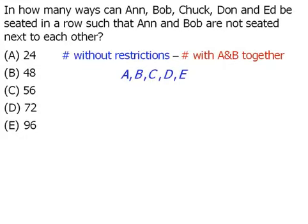Let's do the first part. In how many ways can we seat all 5 people without any restrictions whatsoever? We have 5 people, so let's place our 5 chairs down here. We're going to take this task of seating all 5 people and break it into 5 stages. Stage 1 will be to seat someone in the first chair, stage 2 will be to seat someone in the second chair, and so on. In how many ways can we seat someone in the first chair? Well, we have 5 people, so we can accomplish this stage in 5 ways.